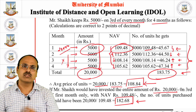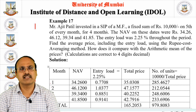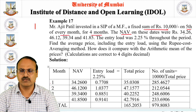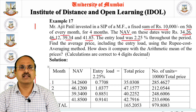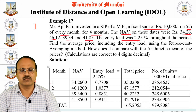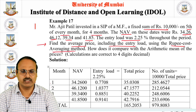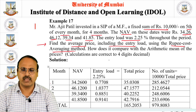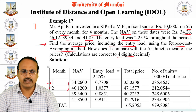Let us look at another example. Mr. Ajit Padid invested in a SIP of his mutual fund scheme, a fixed sum of ₹10,000 on the 5th of every month for four months. The NAV on each of the four months is given: ₹34.26, ₹46.12, ₹39.34, and ₹41.85. There is an entry load of 2.25% throughout the period. We need to find the average price including the entry load using the Rupee Cost Averaging method, and compare it with the arithmetic mean of prices. Calculations are to be done up to four decimal places.